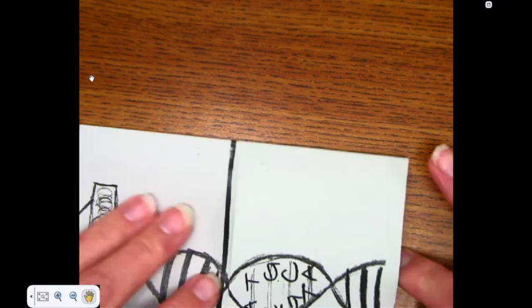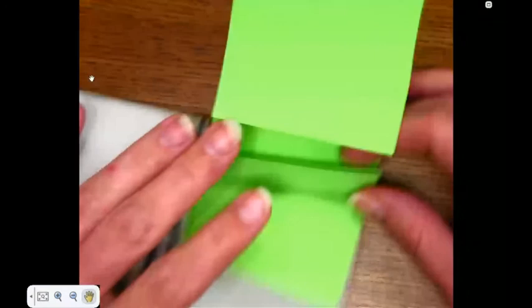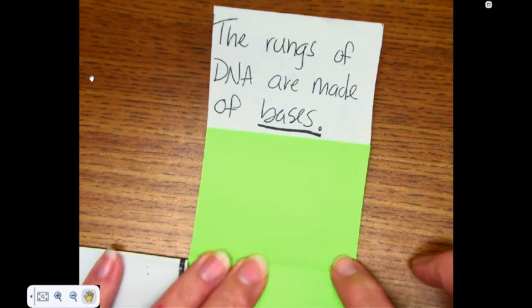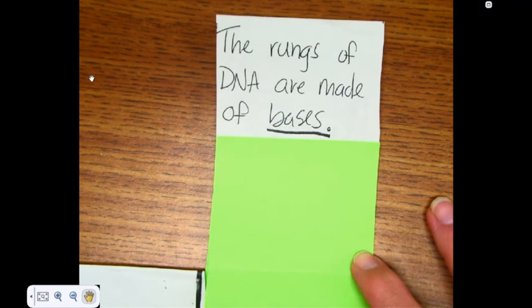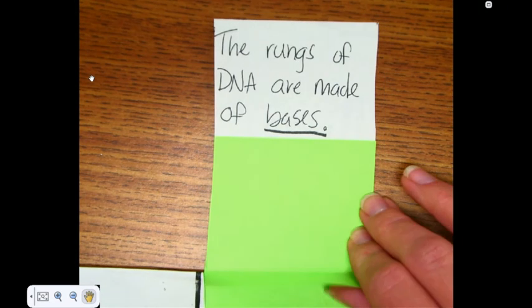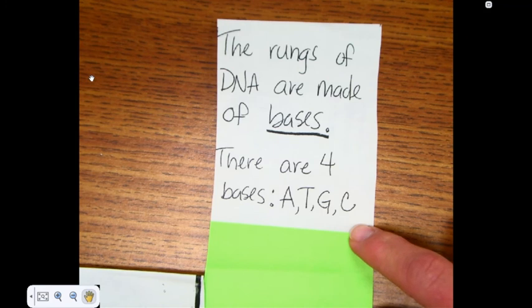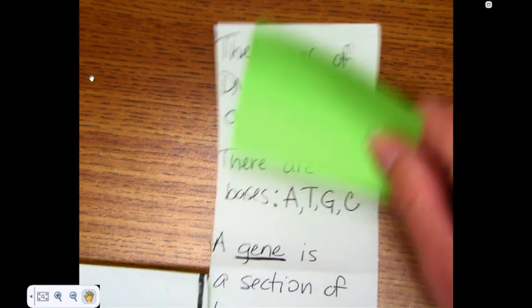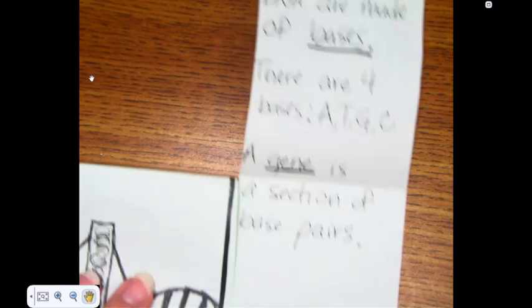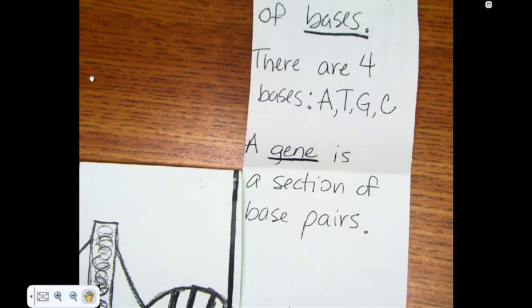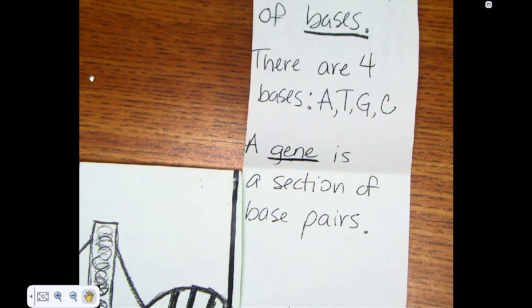So our fourth section: there are four bases—adenine, thymine, guanine, and cytosine. A gene is a section of base pairs. Our lab tomorrow will have you creating a gene of DNA.